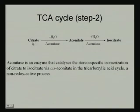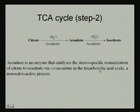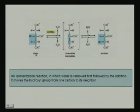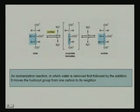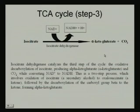In the second step, citrate is converted to isocitrate. Aconitase catalyzes the stereospecific isomerization of citrate to isocitrate via cis-aconitate in the tricarboxylic acid cycle. This is an isomerization reaction: one molecule of water is removed first, followed by the addition of water. This moves the hydroxyl group from one carbon to a neighboring carbon, forming isocitrate.